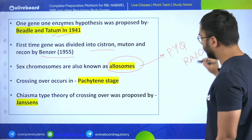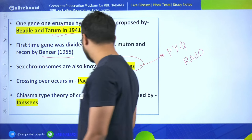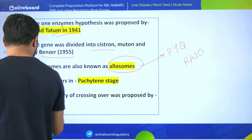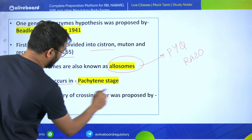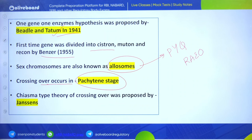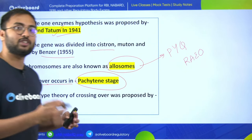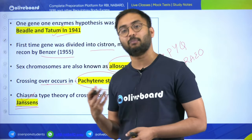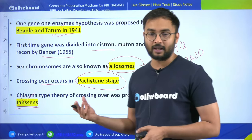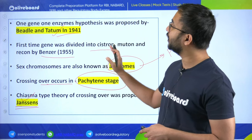Crossing over occurs at the pachytene stage. The chiasma-type theory of crossing over was proposed by Janssens. Many questions at the beginning come from genetics and plant breeding, so try to focus on these topics.